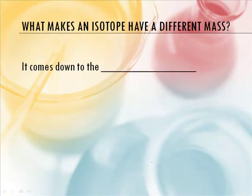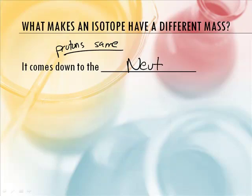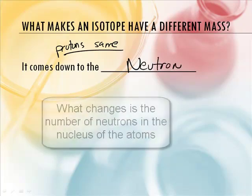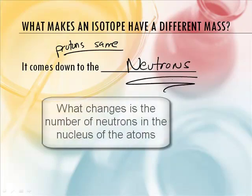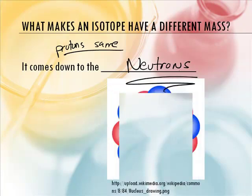So now let's go back to this concept. What makes an isotope have a different mass? The protons are the same because it's the same element. So if the mass is different, then it has to be based on a different number of neutrons. That's it — it's the neutrons that make the difference. If you have a different number of neutrons, then you have a different mass number.